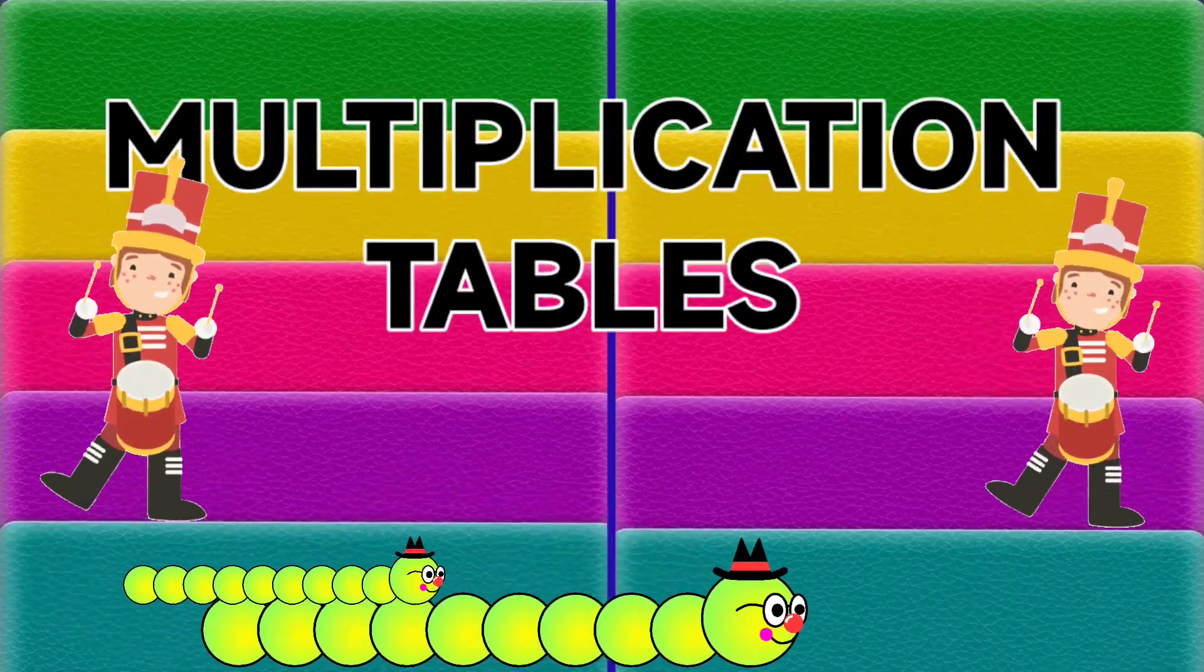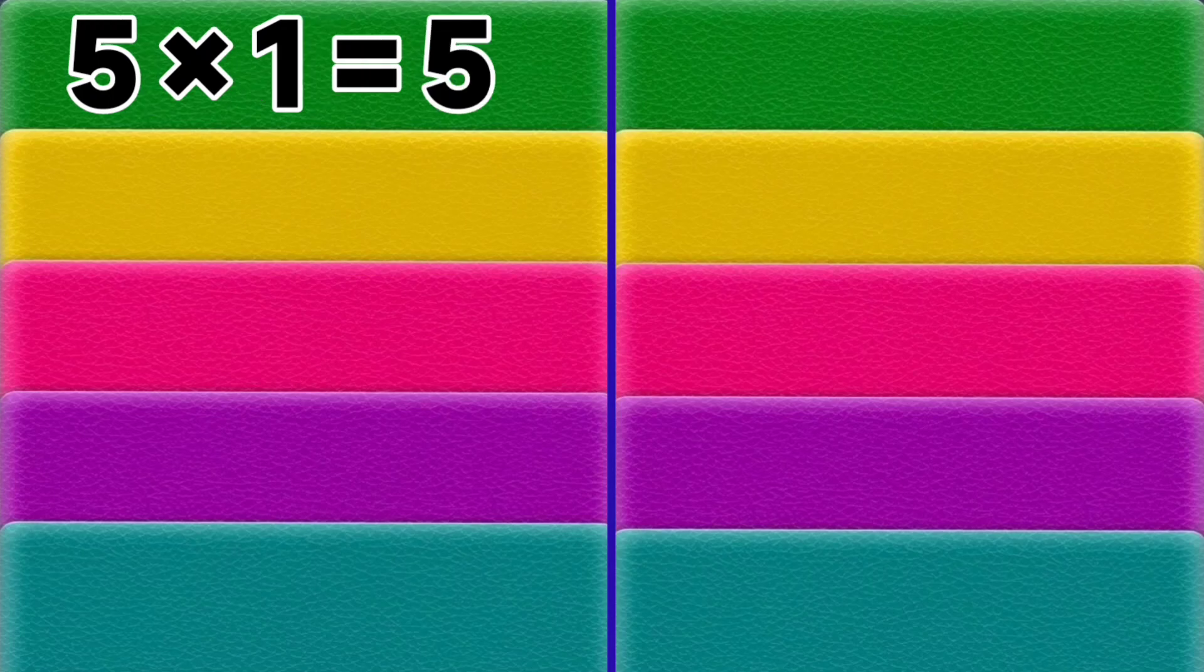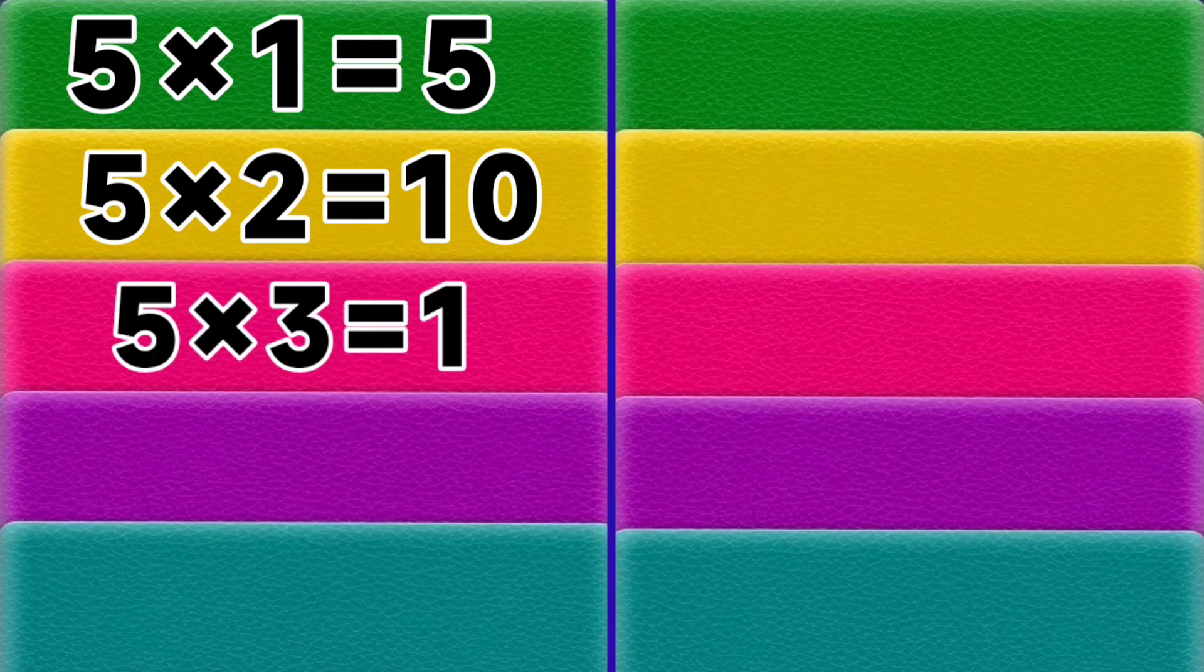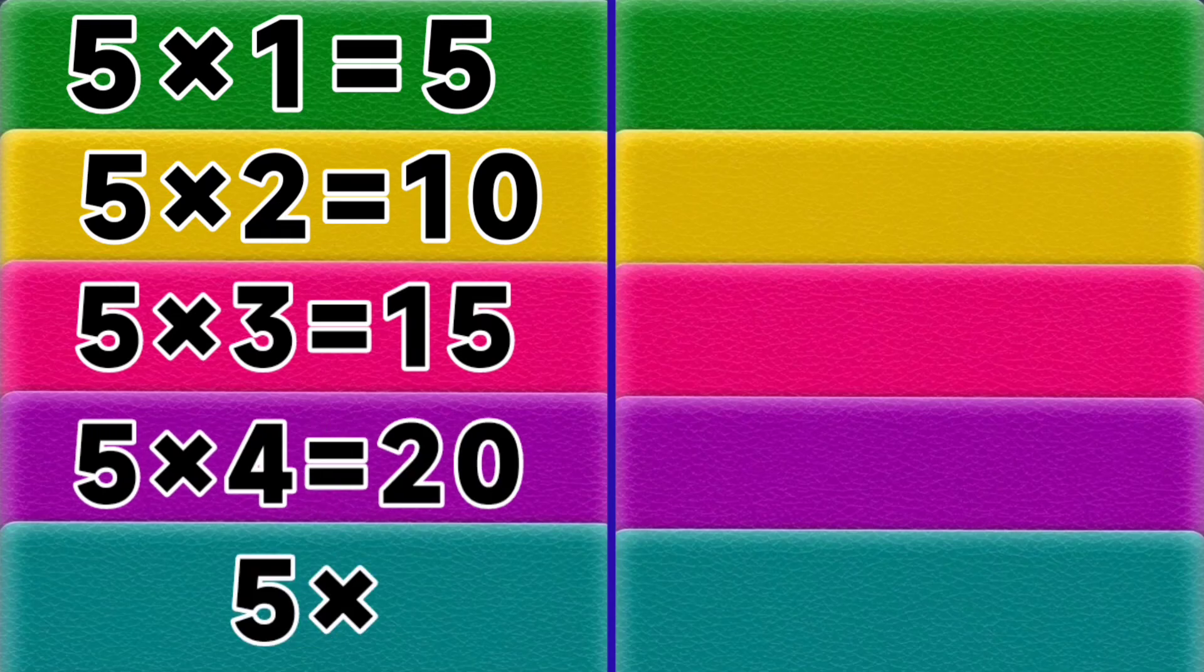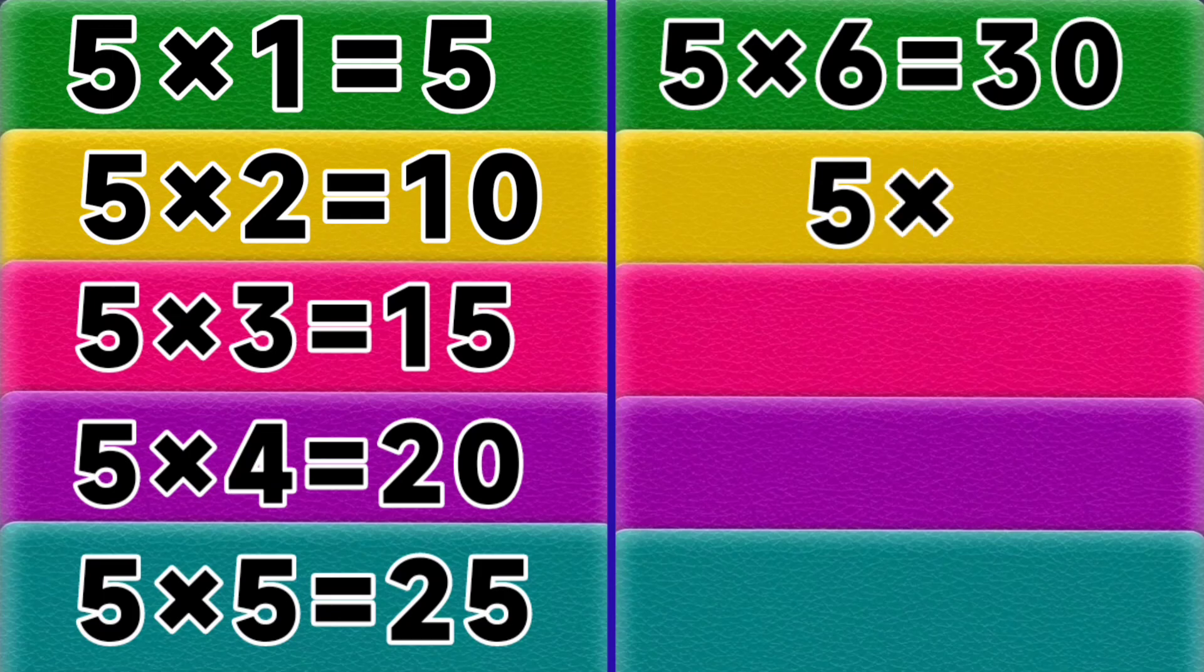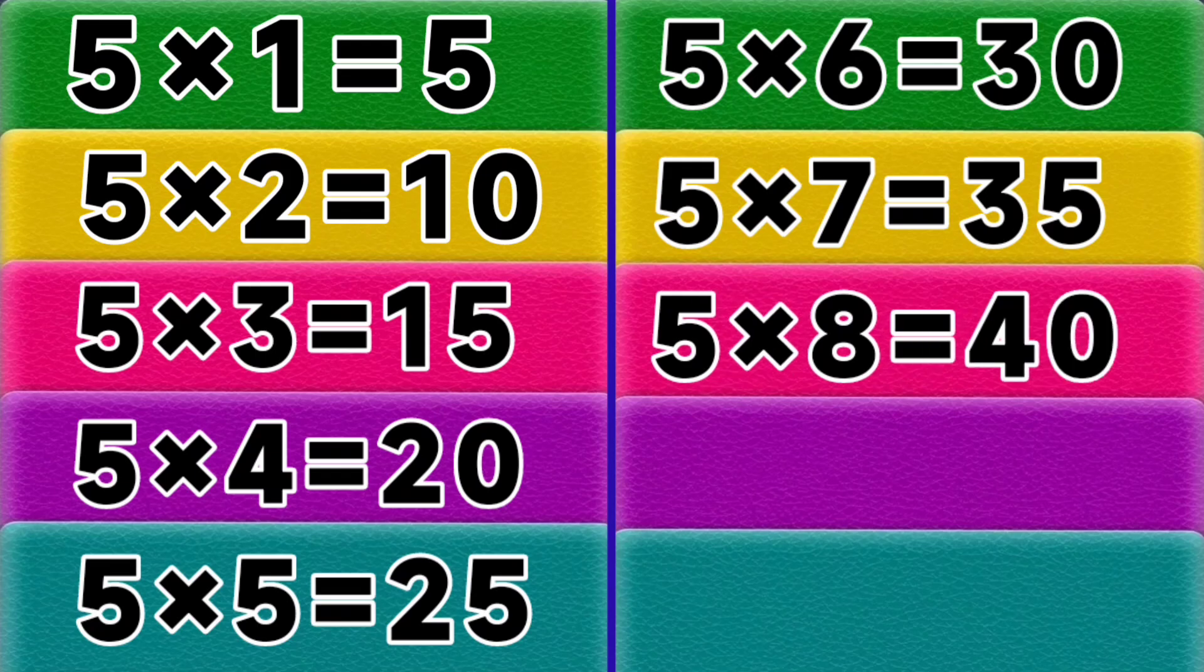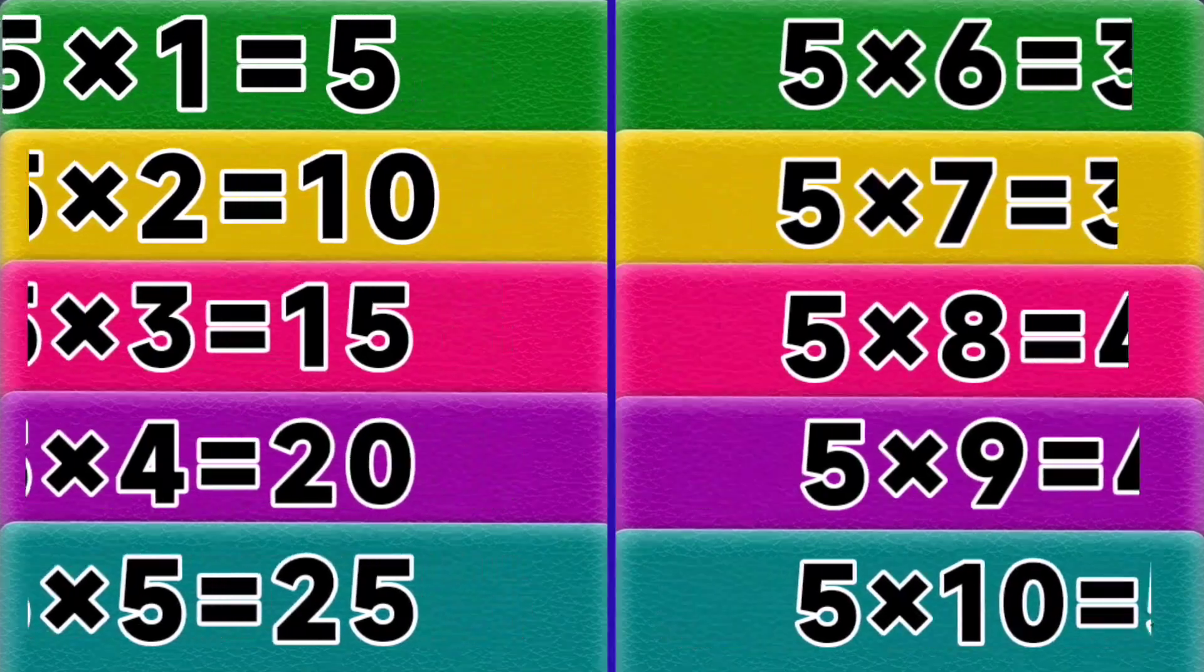Hello kids! Today we will learn multiplication tables 5 to 10. Let's start. 5 ones are 5, 5 twos are 10, 5 threes are 15, 5 fours are 20, 5 fives are 25, 5 sixes are 30, 5 sevens are 35, 5 eights are 40, 5 nines are 45, 5 tens are 50. Table of 6.